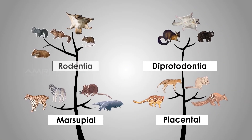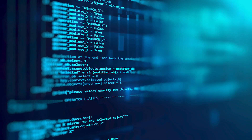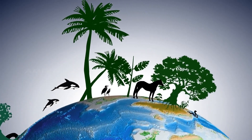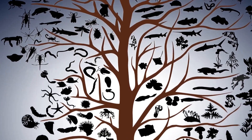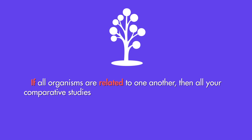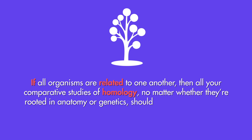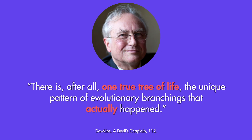The Darwinian argument from homology coupled with the aspiration to draw up the tree of life does make sense. If all organisms are ultimately related due to their descent from a common ancestor, then the more genetic and anatomical cross-examinations you run between them, the clearer a picture you get of how these organisms are related. Each comparison should help crystallize the tree of life. And this is absolutely key: if all organisms are related, then all your comparative studies of homology — whether rooted in anatomy or genetics — should end up cohering with one another, because they would all uncover parts of one and the same big picture. As Dawkins said, there is after all one true tree of life.